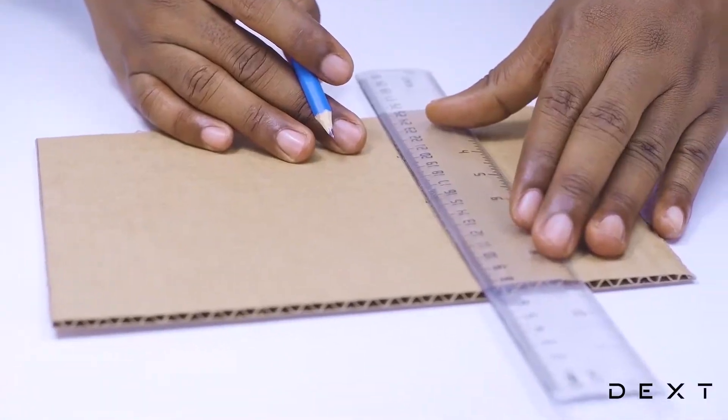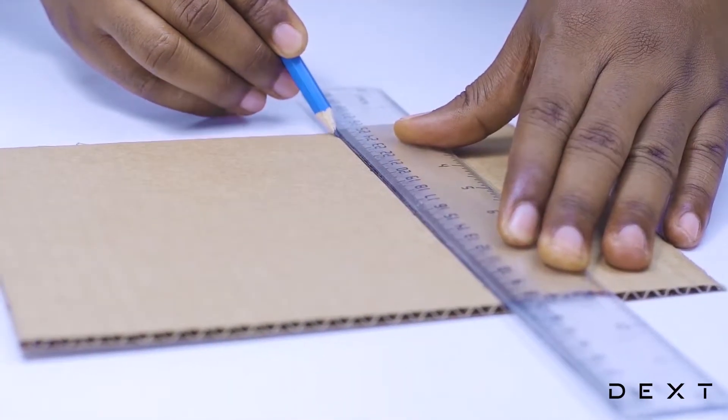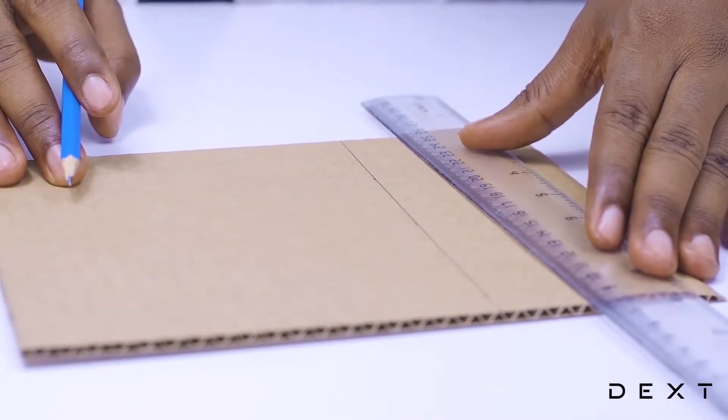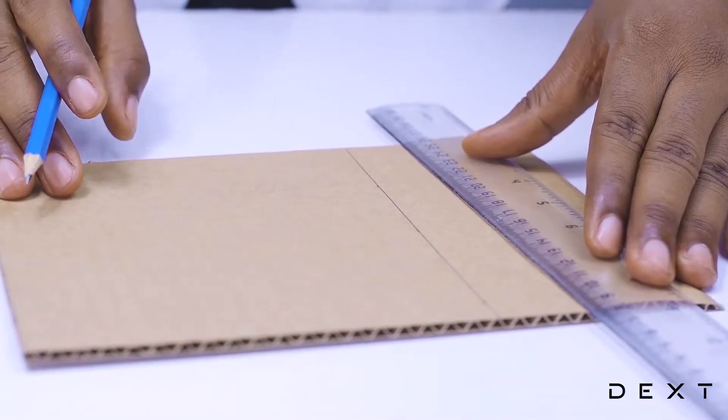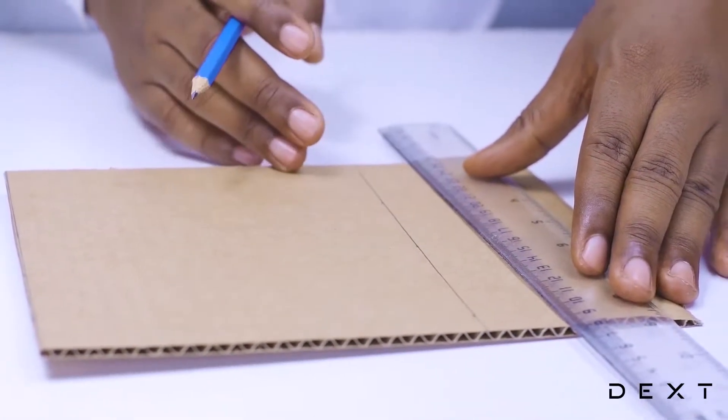Once you have your points, you rule a nice line joining them. So we have our 15 cm side now.